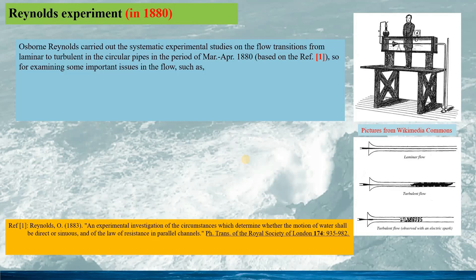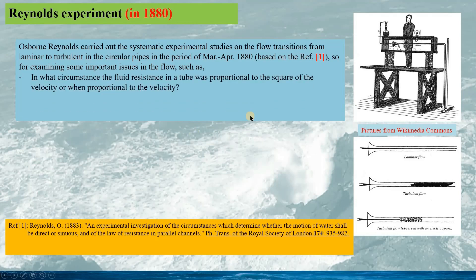Osborne Reynolds carried out systematic experimental studies on the flow transition from laminar to turbulent in circular pipes in the period of March to April 1880, based on the reference published in 1883. The experiment examined some important issues, such as in what situation the fluid resistance in a tube was proportional to the square of the velocity, or when it is proportional to the velocity.